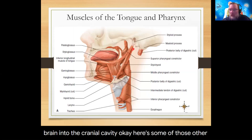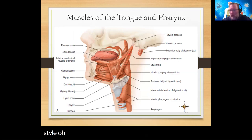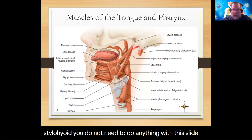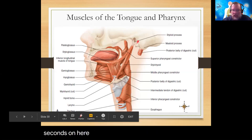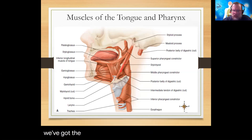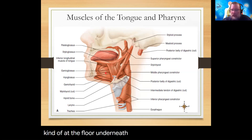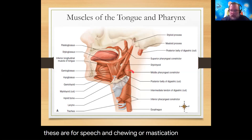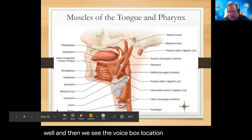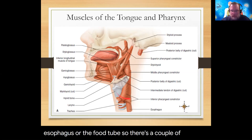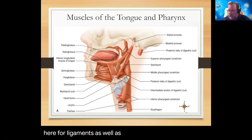A slide showing the stylohyoid and surrounding throat muscles — including the sternohyoid and muscles at the floor of the tongue — is briefly presented. Most of these muscles are involved in speech, mastication, and swallowing. The voice box sits here, and directly behind it is the esophagus. Key ligaments and muscles ensure food and beverages go down the esophagus and not the trachea.